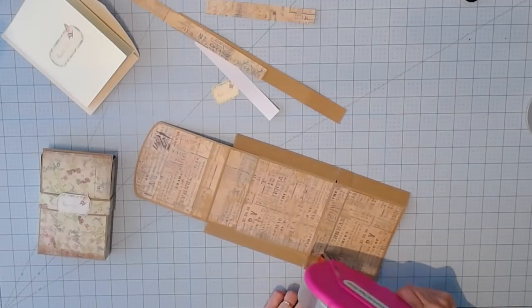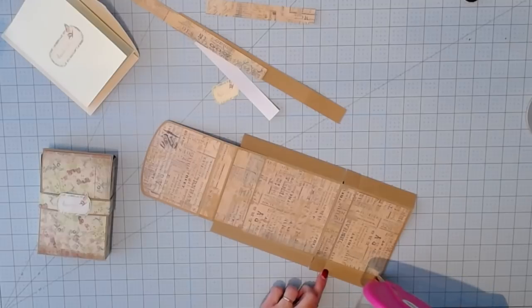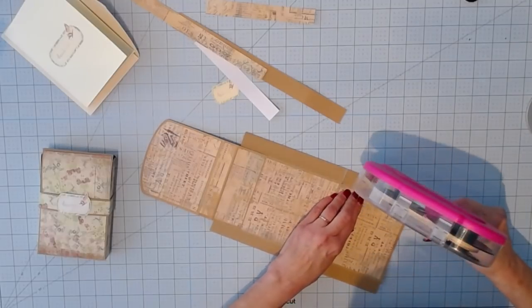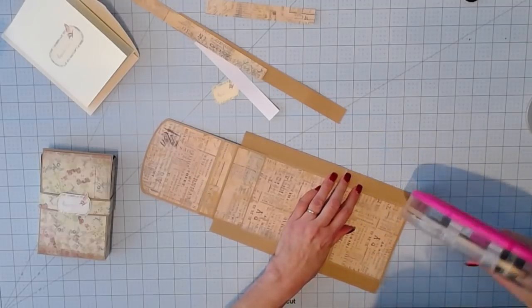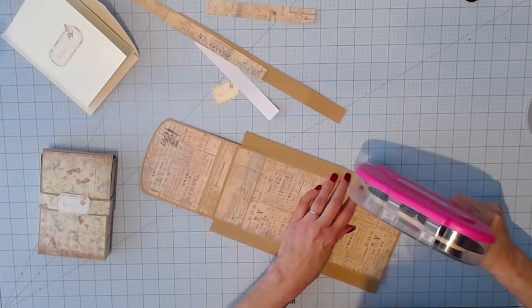Add adhesive to the bottom sides of the box. And then you're going to fold them up and adhere them to the inside of the top.